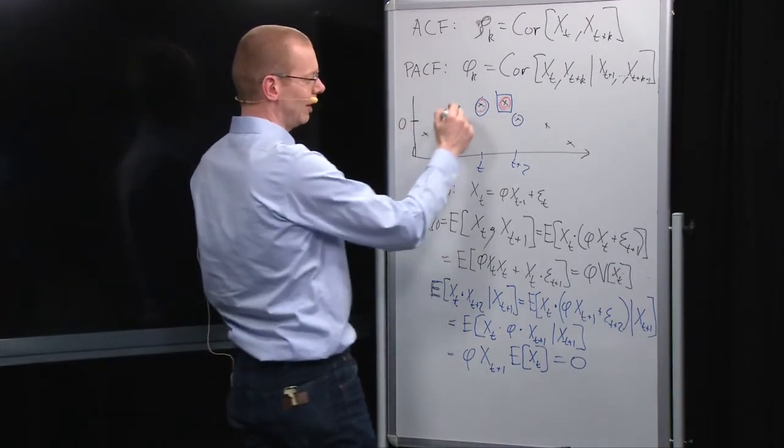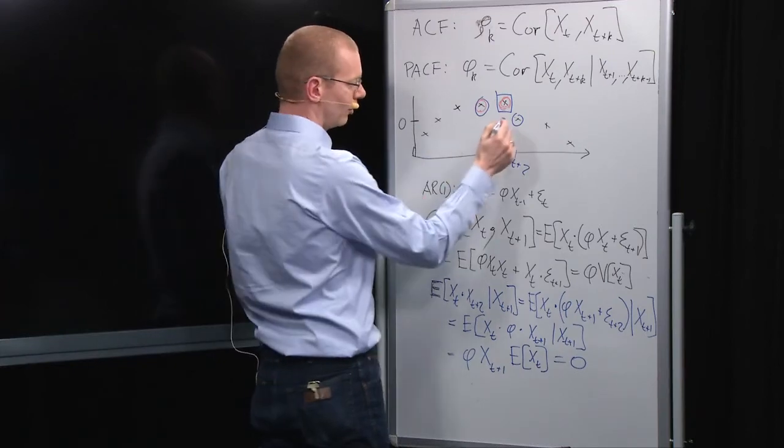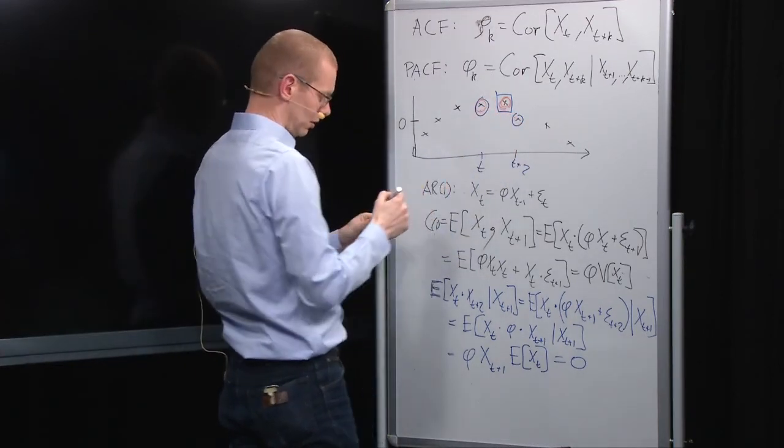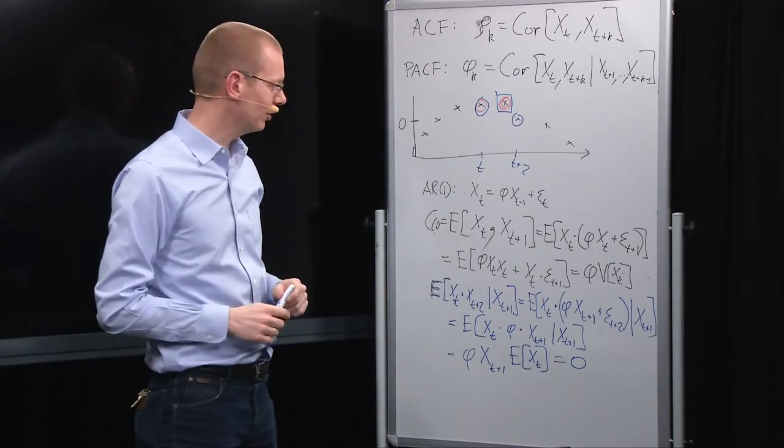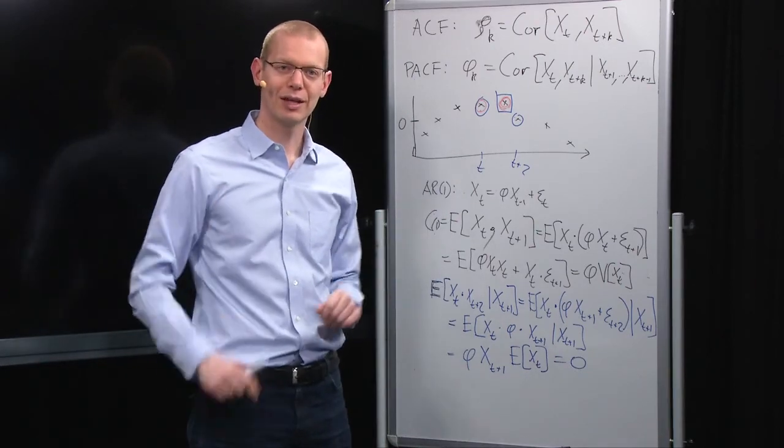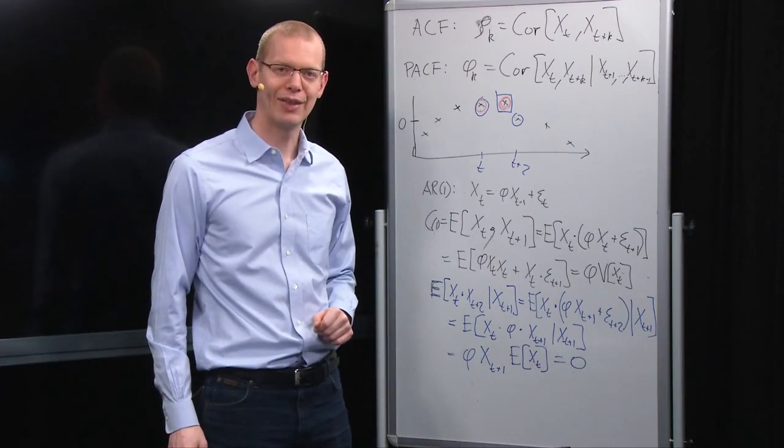So, thereby, we can see that if it was an AR1 process that gave us this, the partial autocorrelation at lag 2 is indeed 0, whereas at lag 1, it is the phi that we have seen previously. So, that was just a small add-on. Thank you.